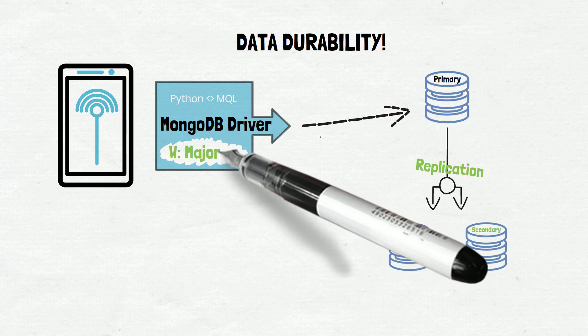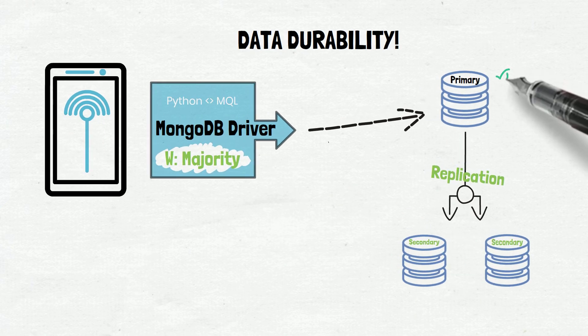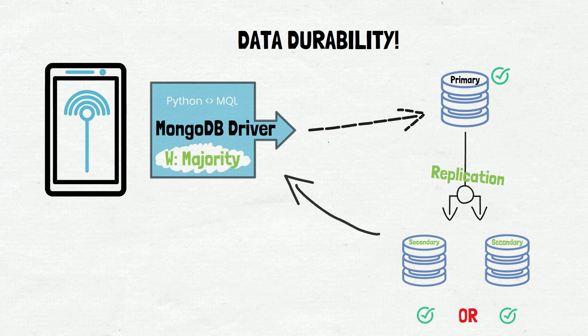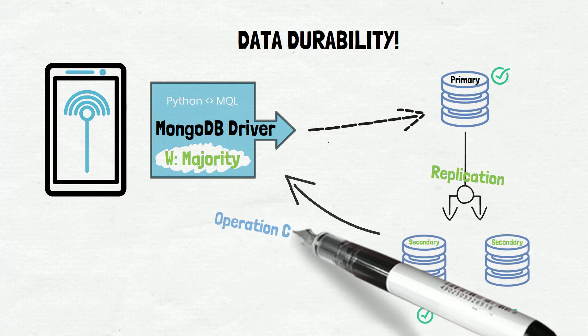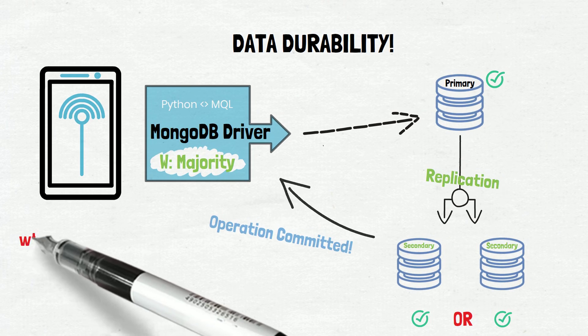For this reason, write concern in MongoDB as of version 5.0 is majority by default, meaning that a majority of replica members must acknowledge an operation before it is considered committed by the driver. In our three-node replica set here, this means that two of our three nodes must acknowledge the write operation, and in a five-node replica set, it would be three of the five, etc.